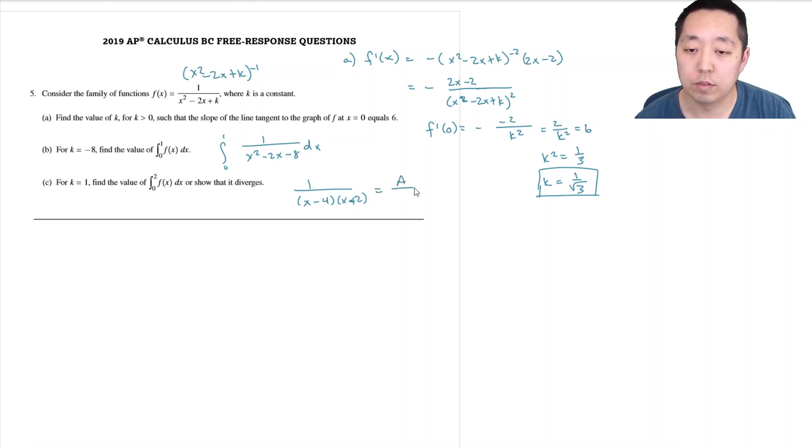So this is A over (x minus 4) plus B over (x plus 2) - a partial fraction decomposition. I'm going to multiply this one by (x plus 2) over (x plus 2) and this one by (x minus 4) over (x minus 4). This side becomes A(x plus 2) plus B(x minus 4) over (x plus 2)(x minus 4).